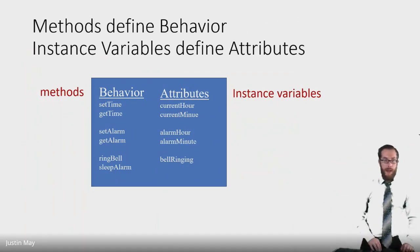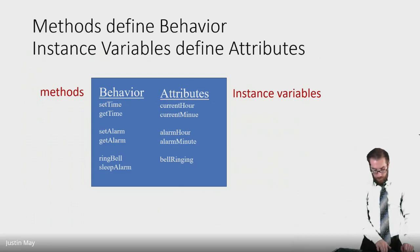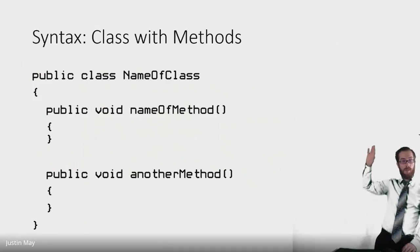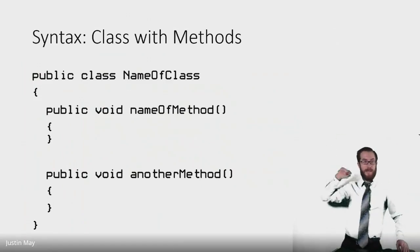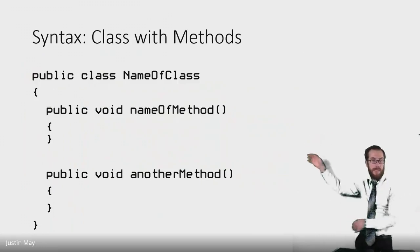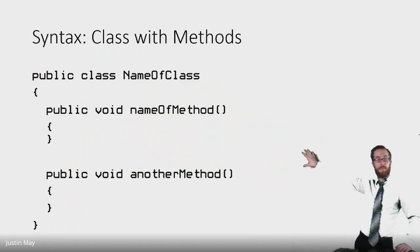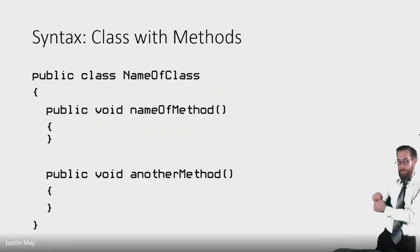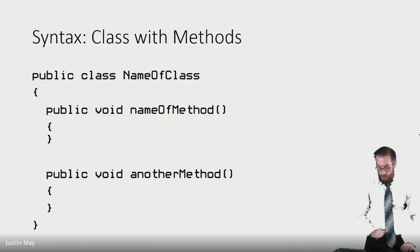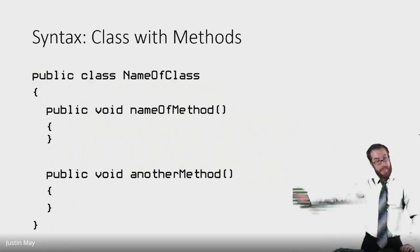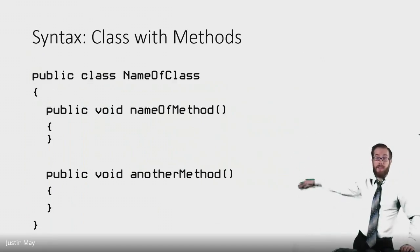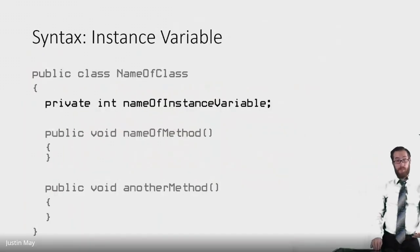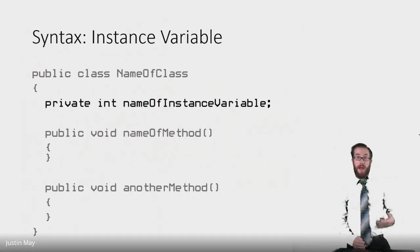This is still all review. When you declare a class you've got your class header — public class, name of class — and within the body of the class you can define a bunch of methods. Each method has its own header and body: public, return type, name of the method with parentheses for its parameter list. You can have many methods, and this defines the behavior of an object — the things that it can do.